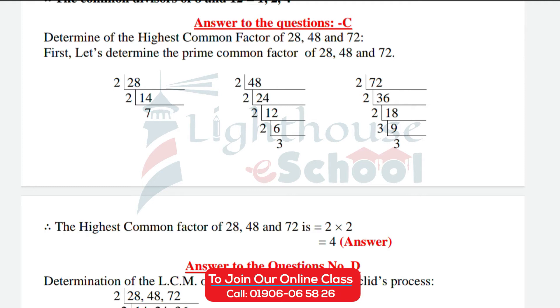Then part C: determine the highest common factor of 28, 48, and 72. First, let's determine the prime factors of 28, 48, and 72.